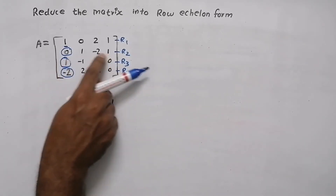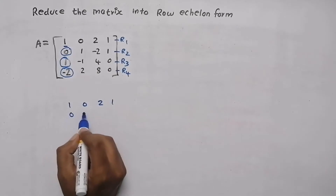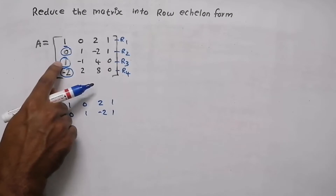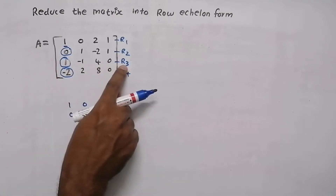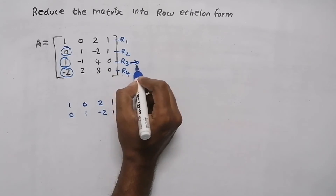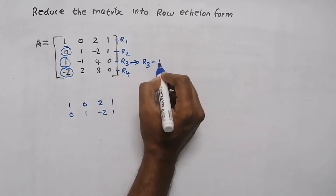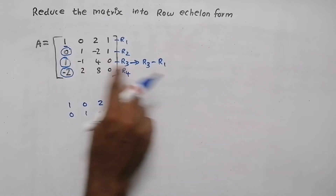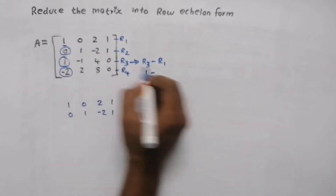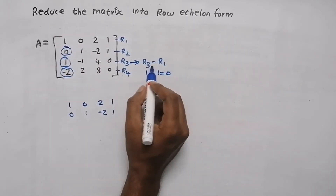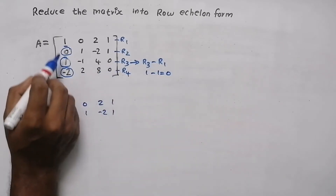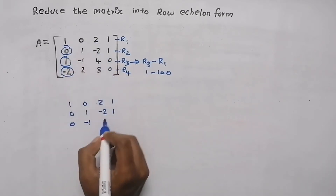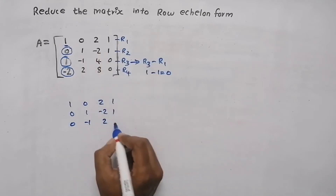Here the element is already 0, so we can write that row also: 0, 1, minus 2, 1. Now the element in the third row is 1 — we need to make it 0. So we are going to do an operation in the third row: R3 minus R1. R3 is 1, minus R1 is 1, so 1 minus 1 becomes 0. We apply this to the entire row: 1 minus 1 = 0; minus 1 minus 0 = minus 1; 4 minus 2 = 2; 0 minus 1 = minus 1.